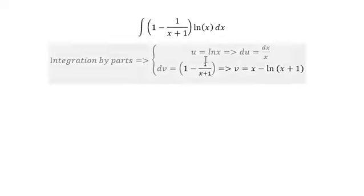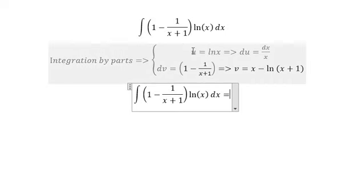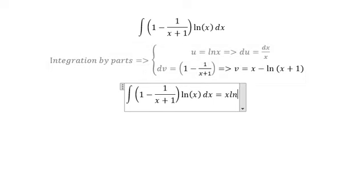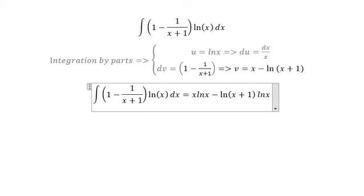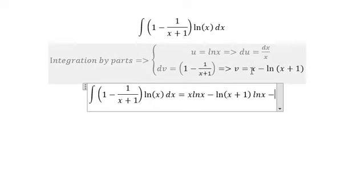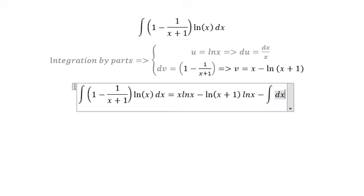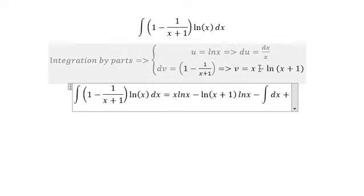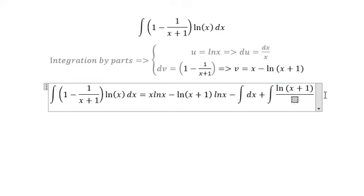So we have the answer using the formula uv minus integral of v du. We have x ln(x) minus ln(x+1) times ln(x), minus the integral of dx, plus the integral of ln(x+1) over x dx.